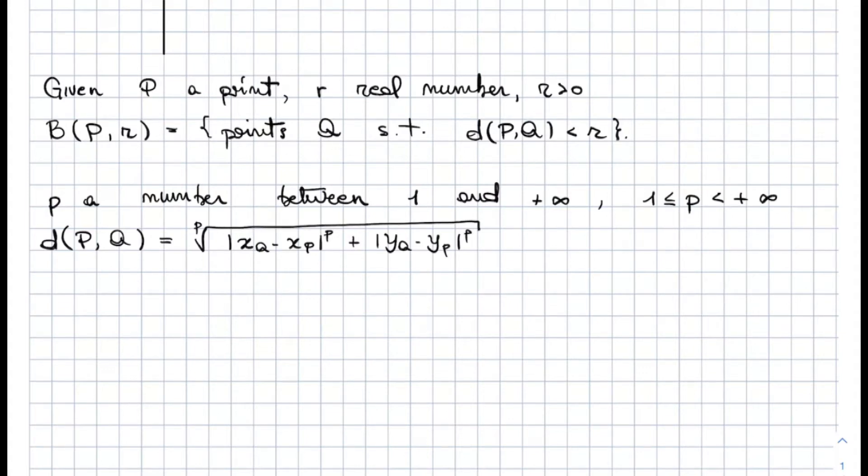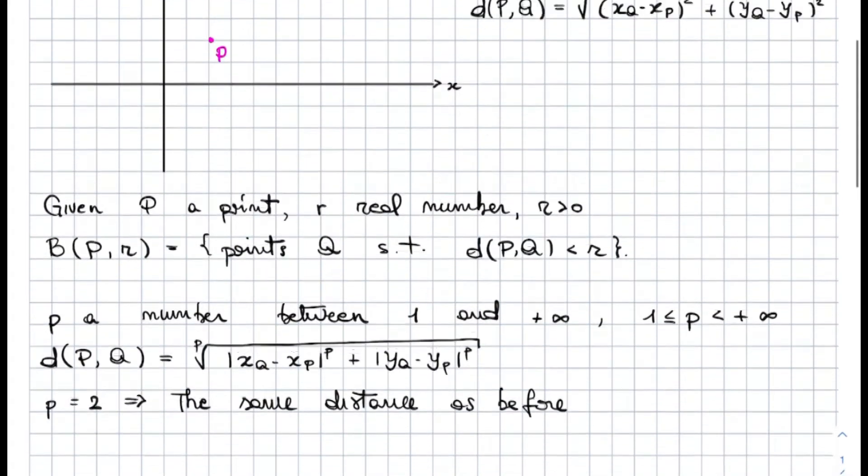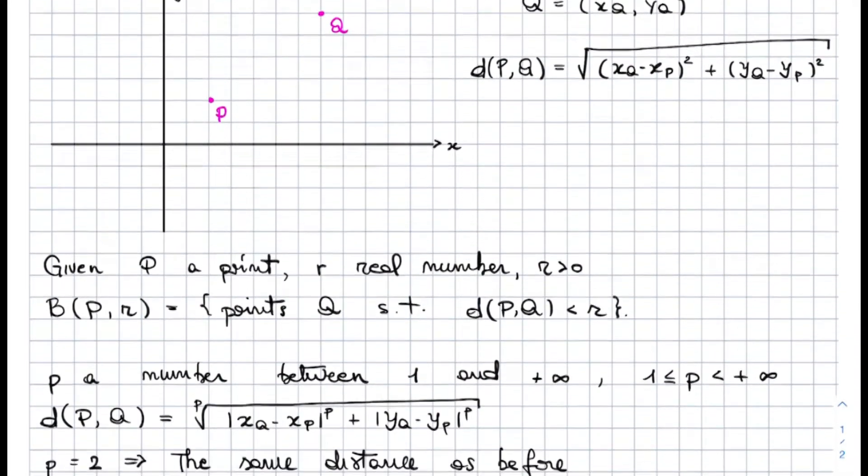So first of all, let us notice that if you take p equal to 2, then we get the same distance as before. Indeed, you can just replace p with 2, and you can see that it is exactly the square root of (xq minus xp) squared plus (yq minus yp) squared.